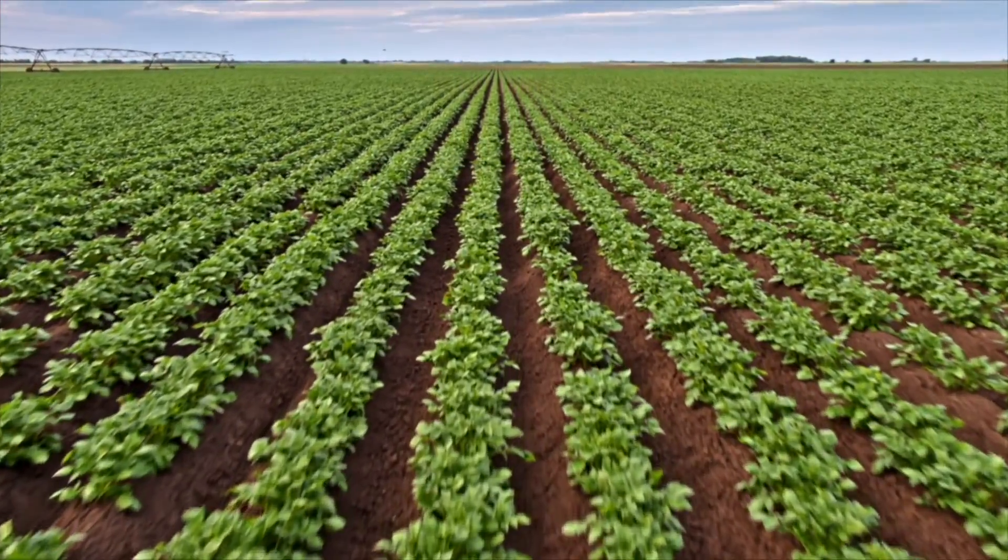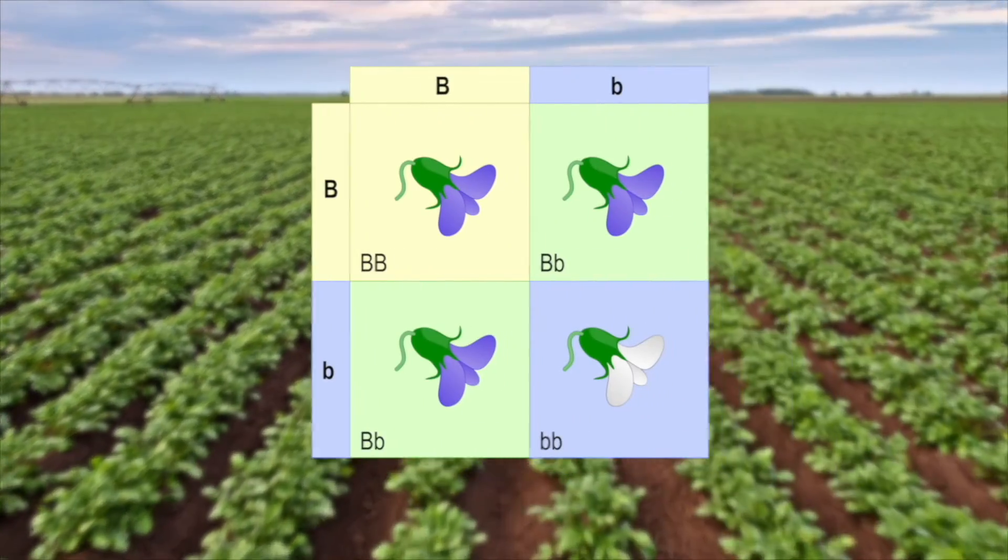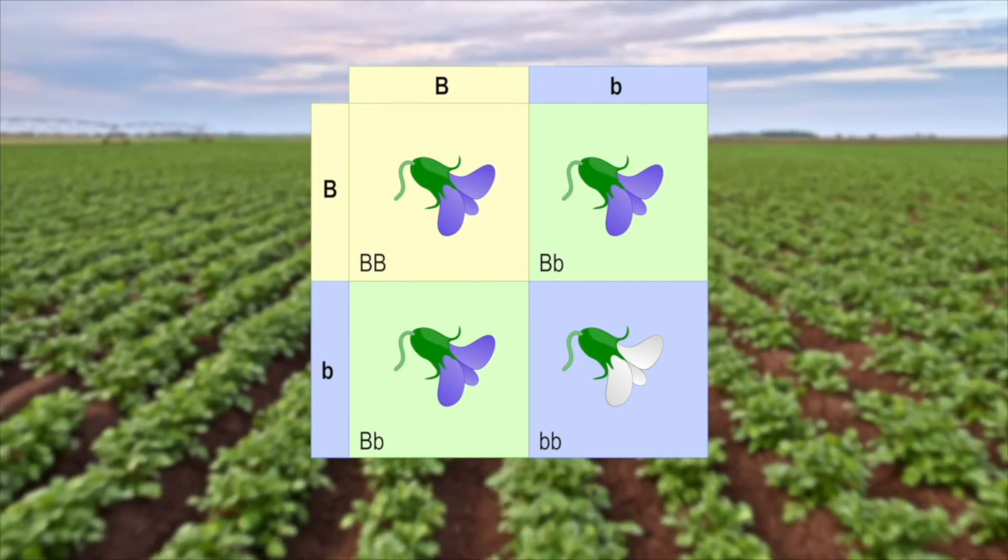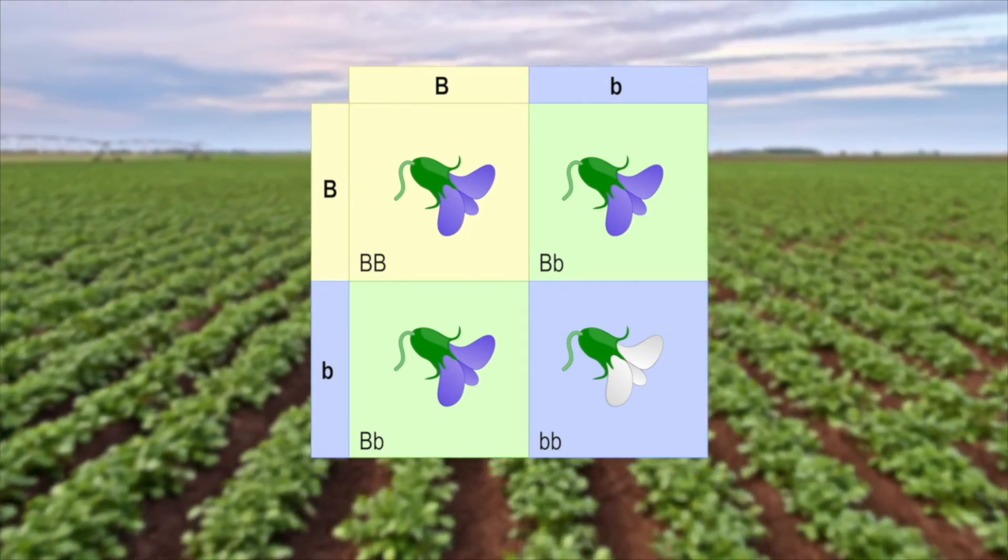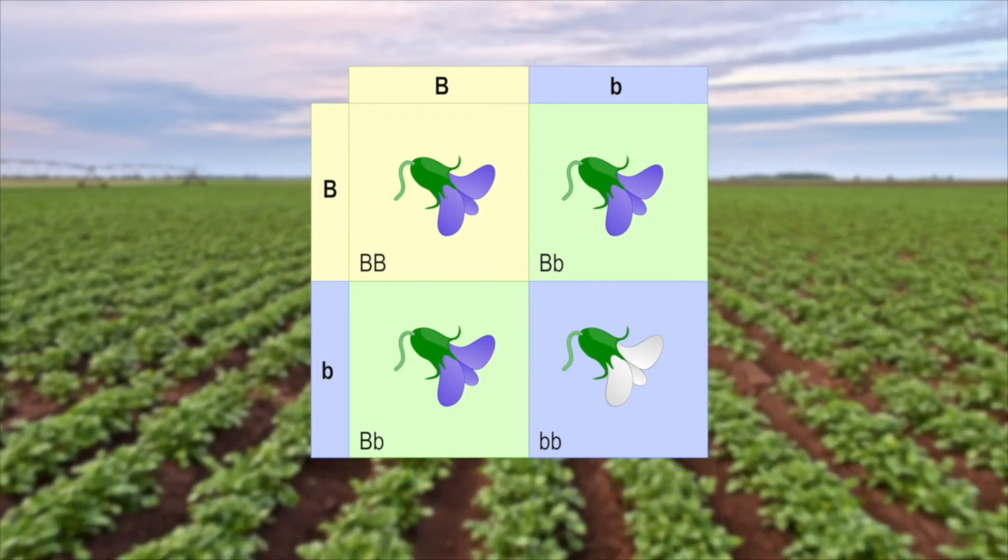These percentages can be applied to as many offspring as the plant has. The four boxes of the Punnett square are simply used to calculate these percentages, and do not indicate that the plant can only have four offspring. It could have hundreds over the course of its life.